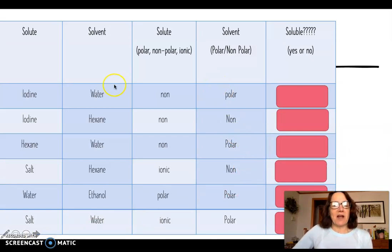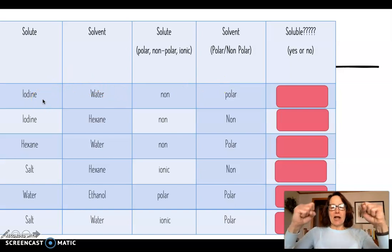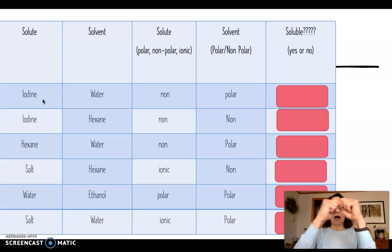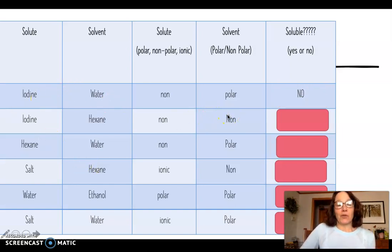We're going to go through a couple examples here. Iodine is my solute. It's just two iodine atoms covalently bonded together, nonpolar. So when I drop it in water, which is polar, it will not dissolve. Iodine, nonpolar. Hexane, nonpolar. It will dissolve. It would turn like a purple color, like Kool-Aid would go into solution.